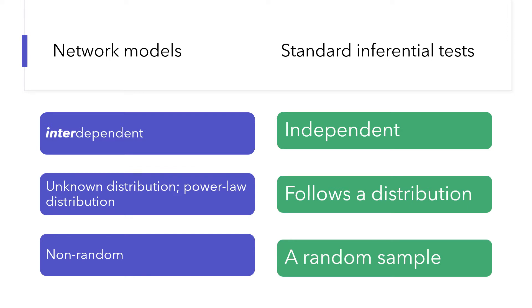Why don't we use standard inferential statistical tests to analyze network data? This is because network data, by the nature of networks, violate three assumptions of standard inferential tests. First, standard inferential tests assume the observations are statistically independent. But network data are interdependent. If one node is removed from the network, it can influence all other nodes' connectivity in the network.